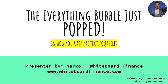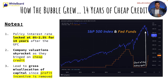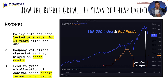If you don't know Joe, go follow him on Twitter at Joe Consorti. So how did this bubble grow? Basically, we've had 14 years of cheap credit. The policy interest rate, or the Fed funds rate, has been locked in anywhere from 0% to about 2.5%. Ever since the great financial crisis, the Federal Reserve has adopted a policy of what we call ZERP — Zero Interest Rate Policy. This is basically the rate at which they lend out money to commercial banks. We plotted the Fed funds rate and a chart of the S&P 500.